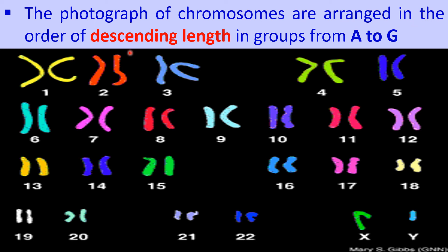The A group consists of the 1st, 2nd, and 3rd pairs of homologous chromosomes. The B group consists of the 4th and 5th pairs. The C group consists of the 6th through 12th pairs and also includes the X chromosome, making it the largest group.